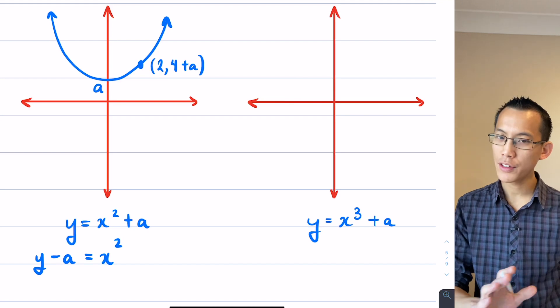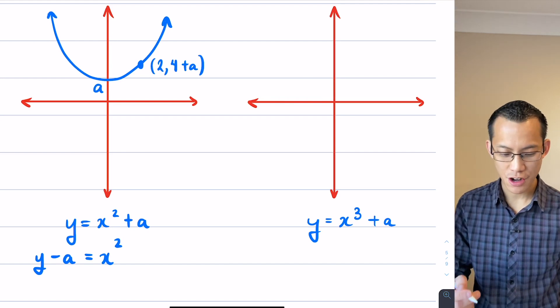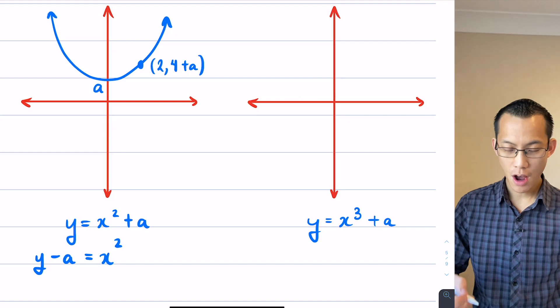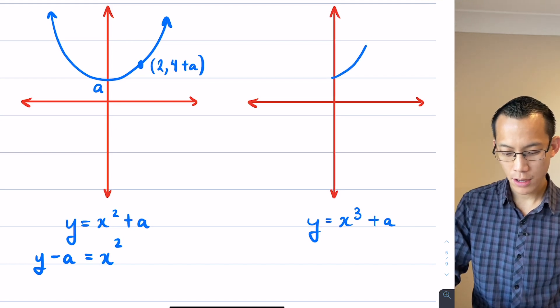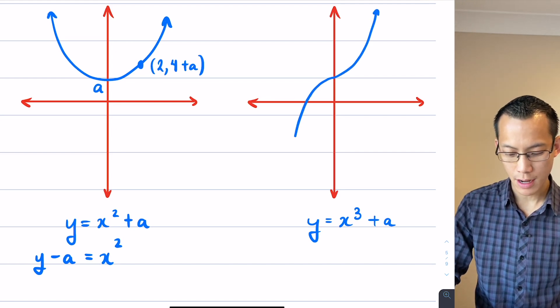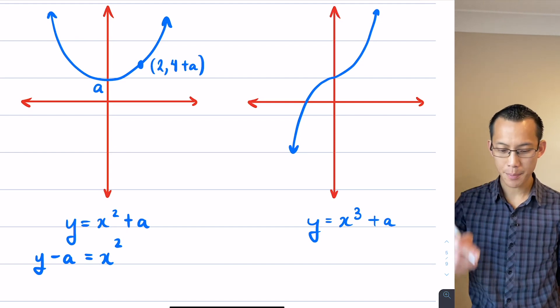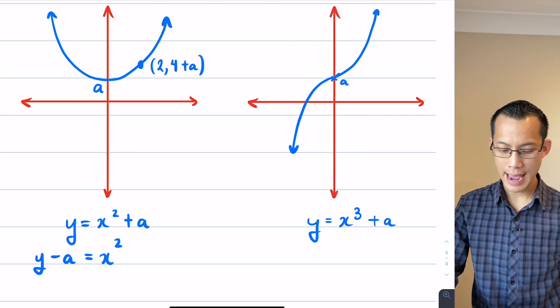The same thing is going to happen here. I'm not even going to go to Desmos because I'm convinced I know what's going on here. I have an upward movement of A units. So that same cubic shape that I saw earlier has been moved up A units like so. So this is going to be at A.